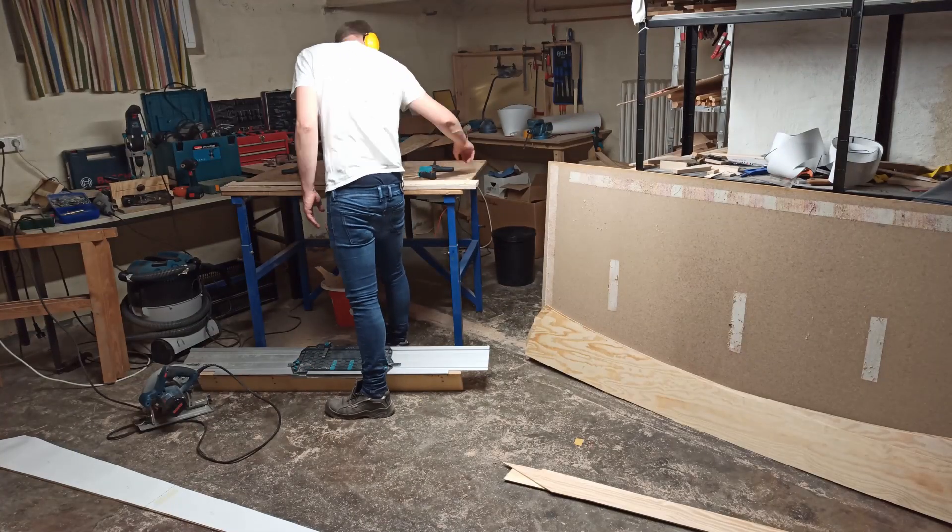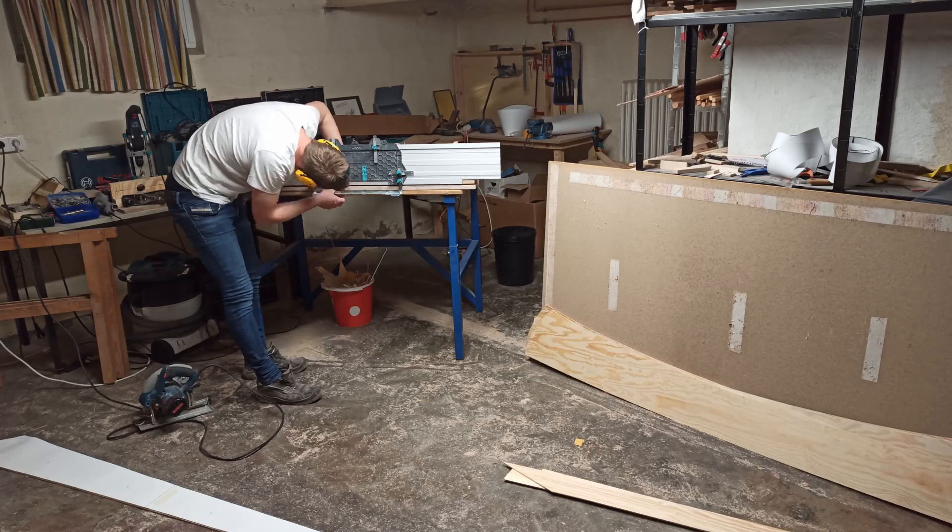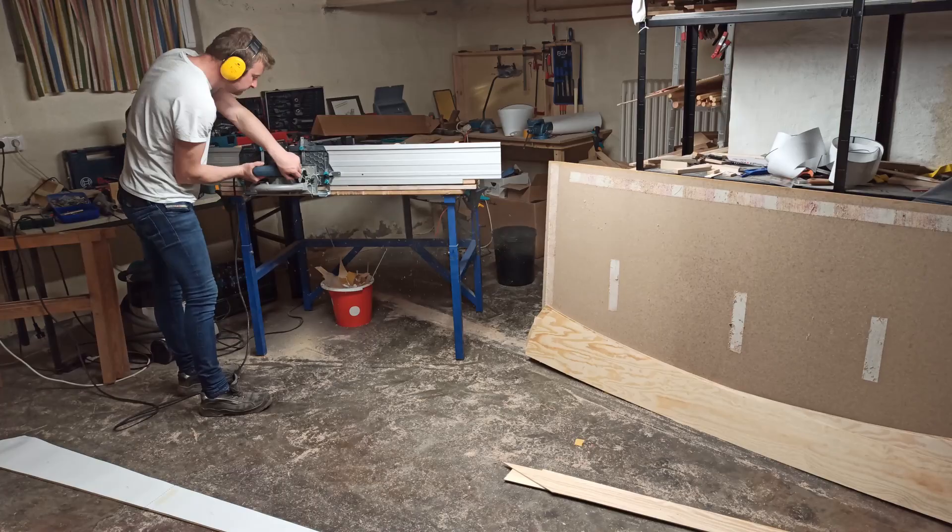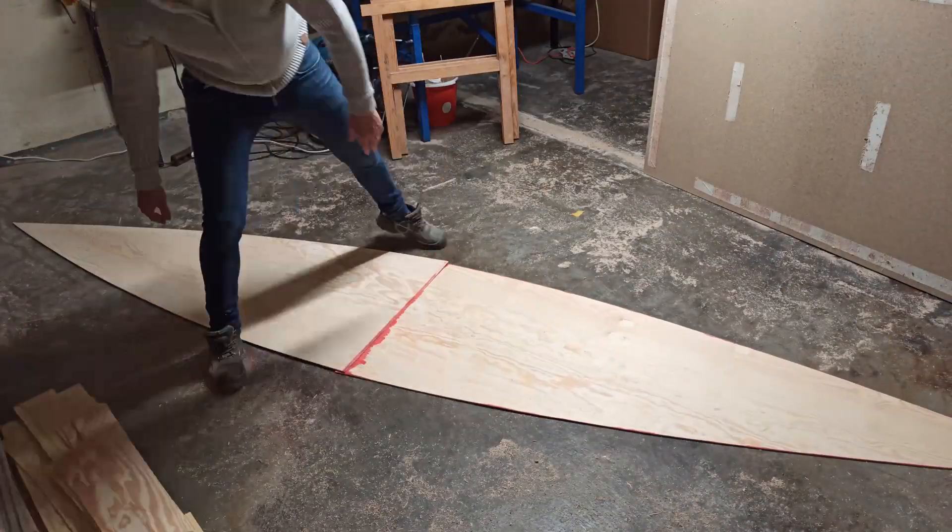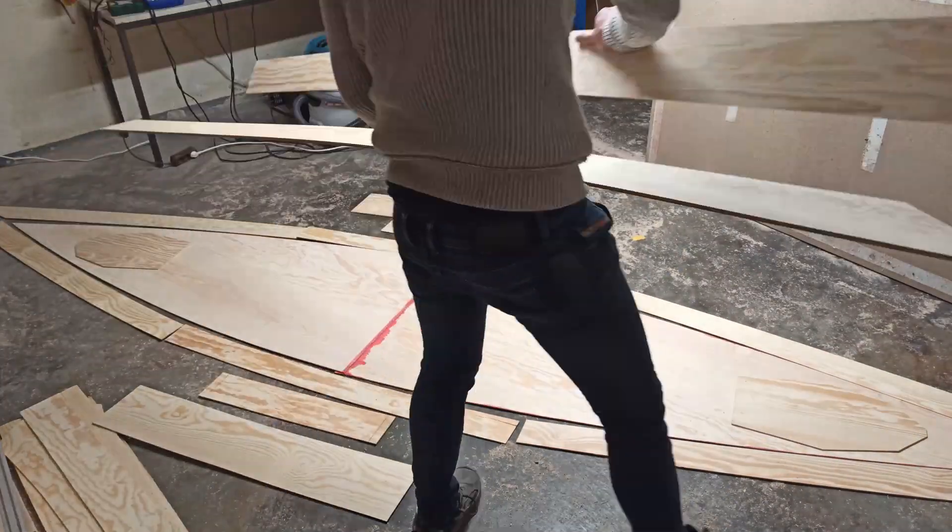Each plank consists of 3 parts which are connected with scarf joints. I made all cuts with my scarf joint jig I made a separate video about. To know exactly how long the beveled areas are and where they start I made some test cuts first and extended the parts as needed. And here are all parts of the hull.